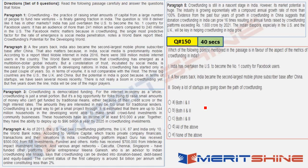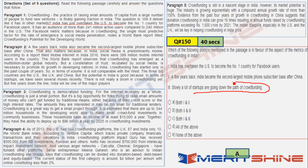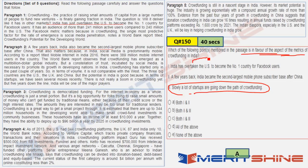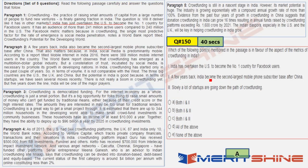Question 150: pause for 40 seconds. 'Which of the following points mentioned in the passage is in favor of the metrics of crowdfunding in India?' The metrics are in paragraphs 1 and 2: 'India has overtaken the US to become number one.' Statement 3 ('slowly, a lot of startups are going the crowdfunding path') is not given as a metric in the passage. Hence only statements one and two are correct. Answer: both one and two.